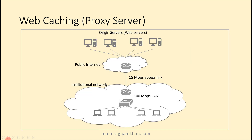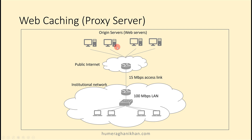Web caching reduces the response time for clients. Consider an institutional network represented by a larger cloud where the internal transmission links run at 100 Mbps. The access line connecting the institutional network to the internet runs at 15 Mbps, and web servers are placed on the internet.